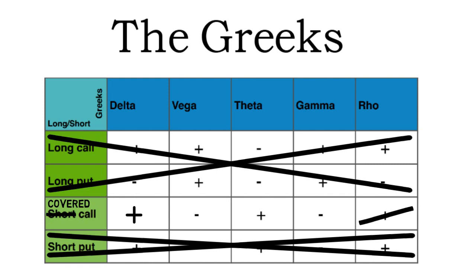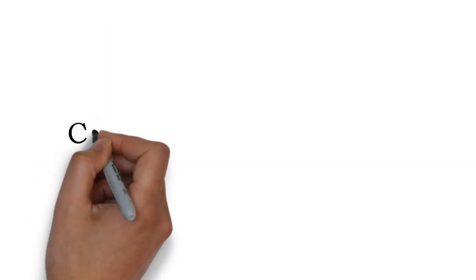Next up, vega represents the impact of implied volatility on the position. A negative vega means that a short call position would profit from a drop in implied volatility. So a covered call position would profit from decreasing implied volatility. This means it's best to enter a covered call position when implied volatility is high. To find out if implied volatility is high, you could use IV rank — if IV rank is over 50, implied volatility is relatively high. Theta is the Greek that represents time decay. A positive theta means that this position profits from time passing — a covered call profits every day from time passing by. The gamma of a covered call is negative.